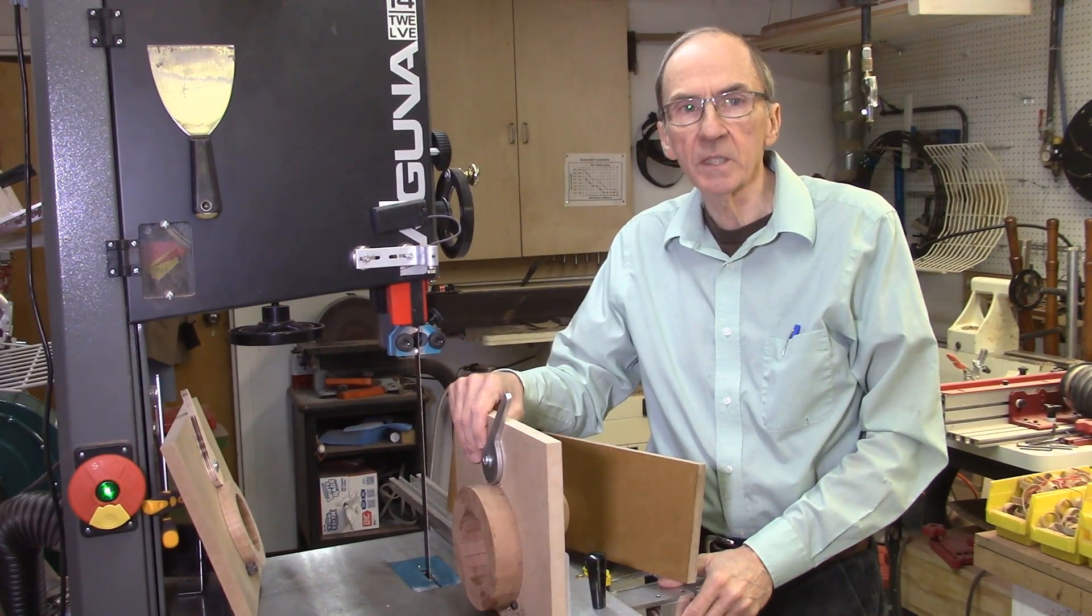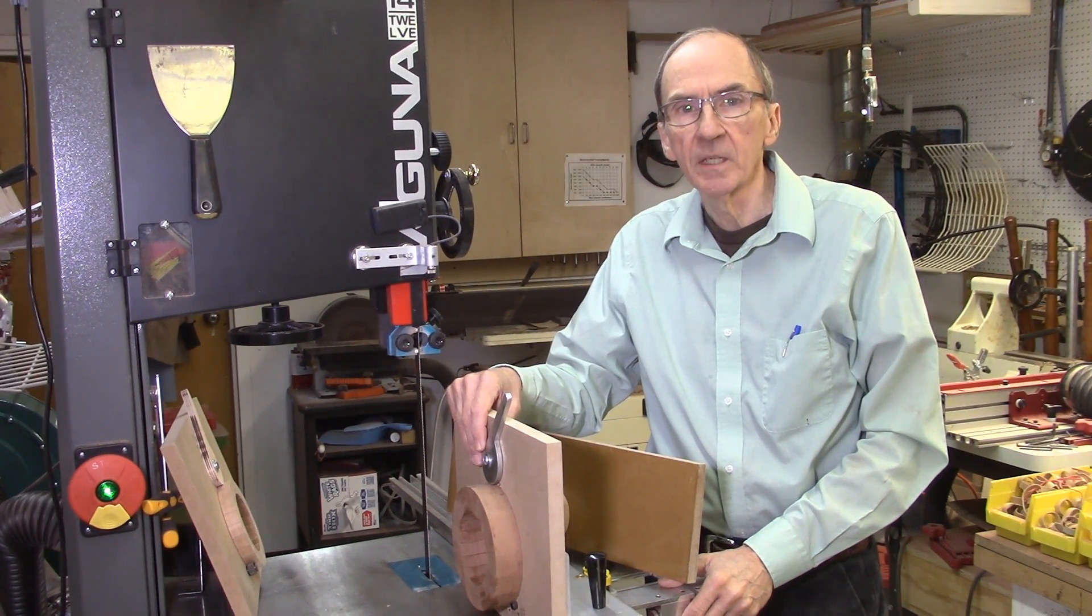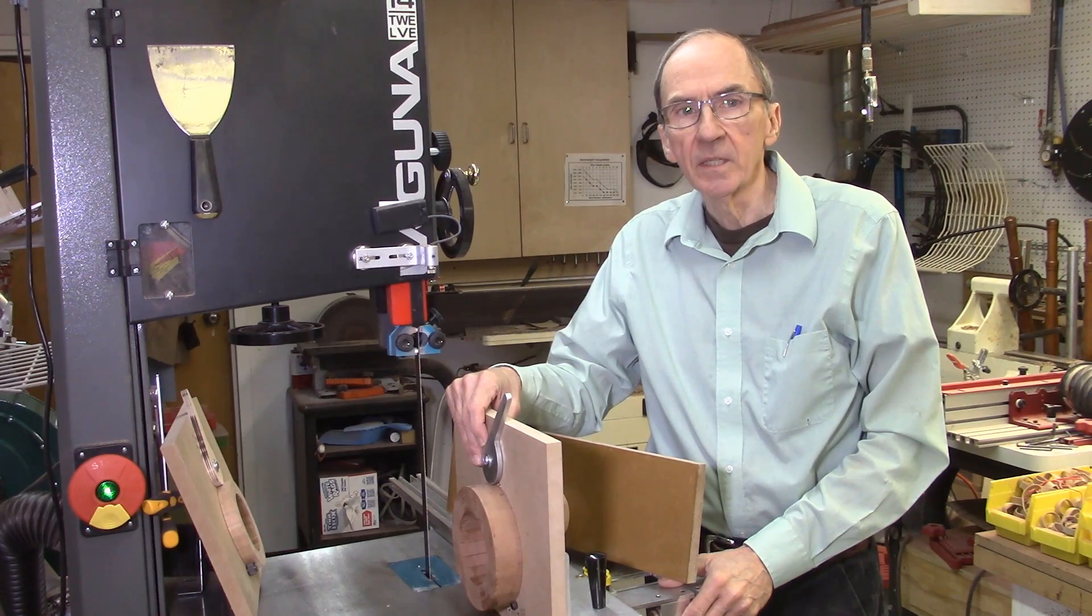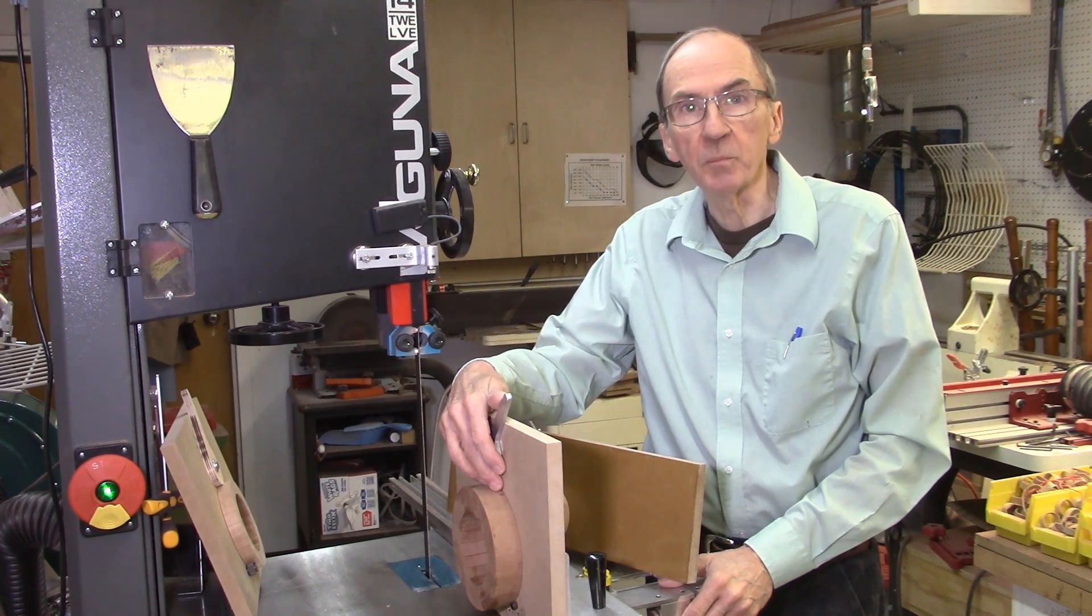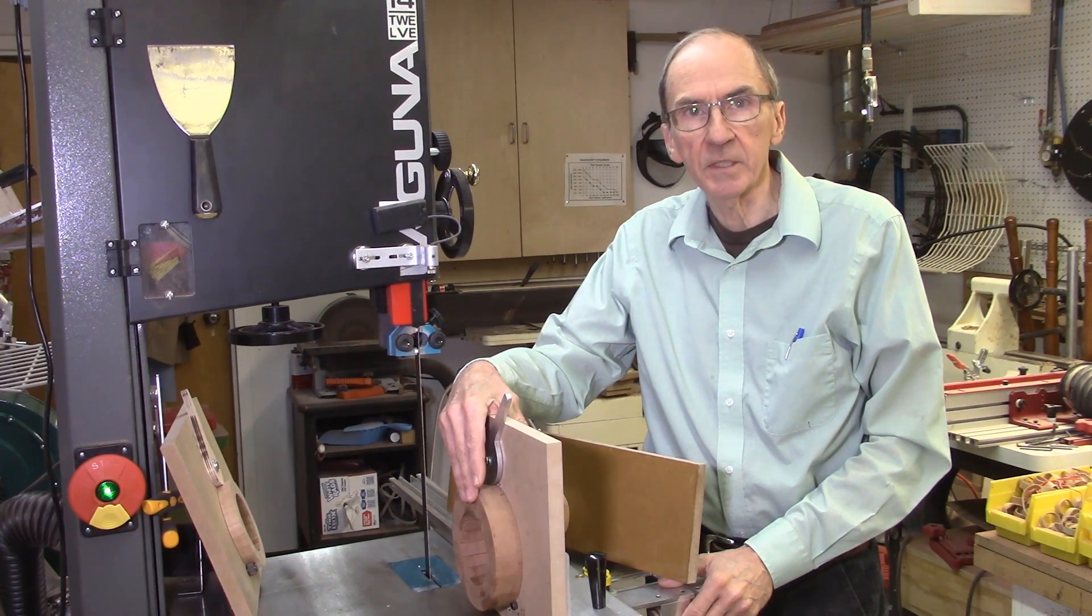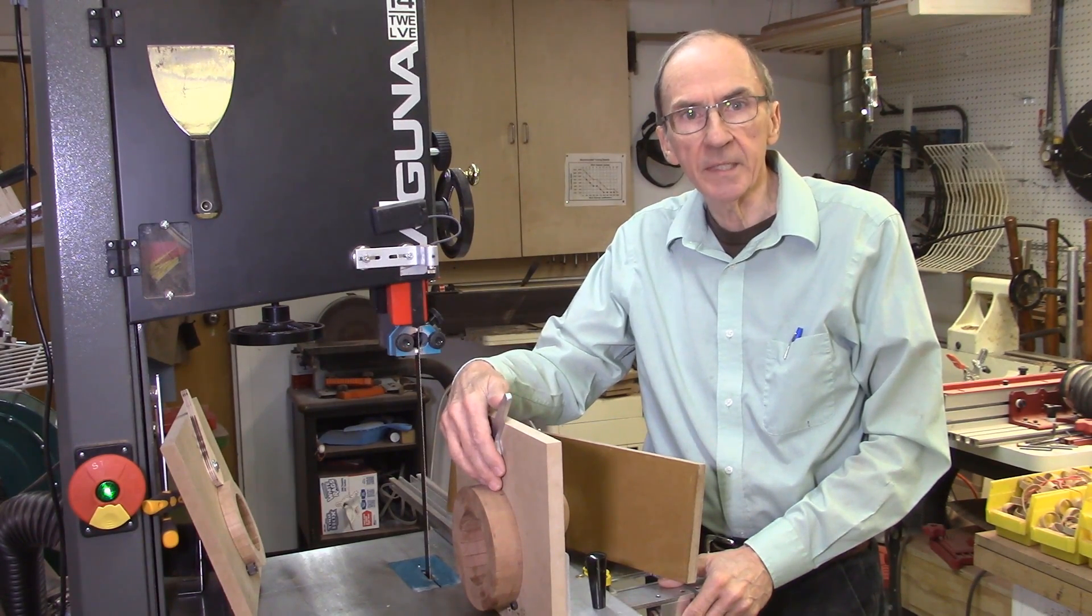This video describes the construction of a clamping sacrificial fence for the Accu-Slice carriage that uses an offset cam to clamp the segmented disc or other boards to the sacrificial fence without the use of double-sided tape or glue.